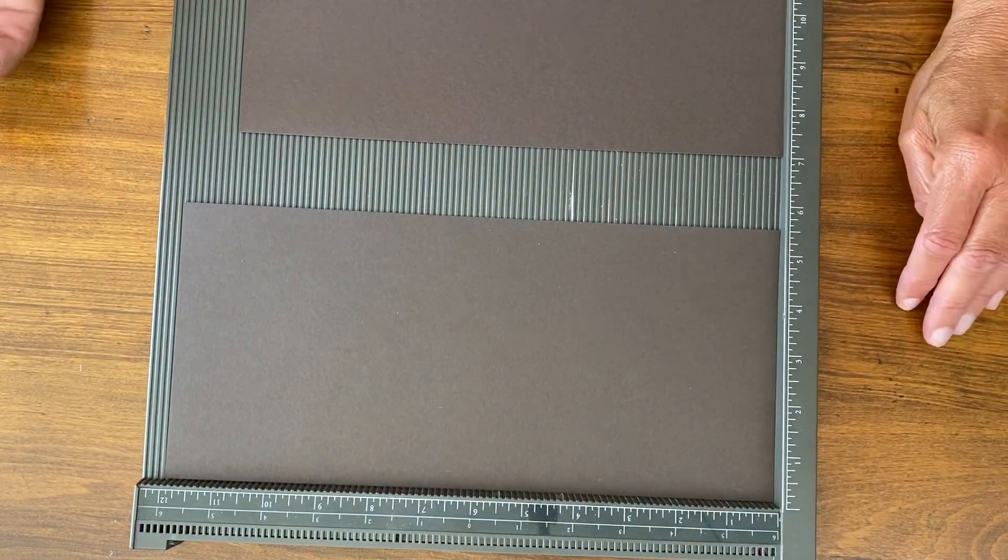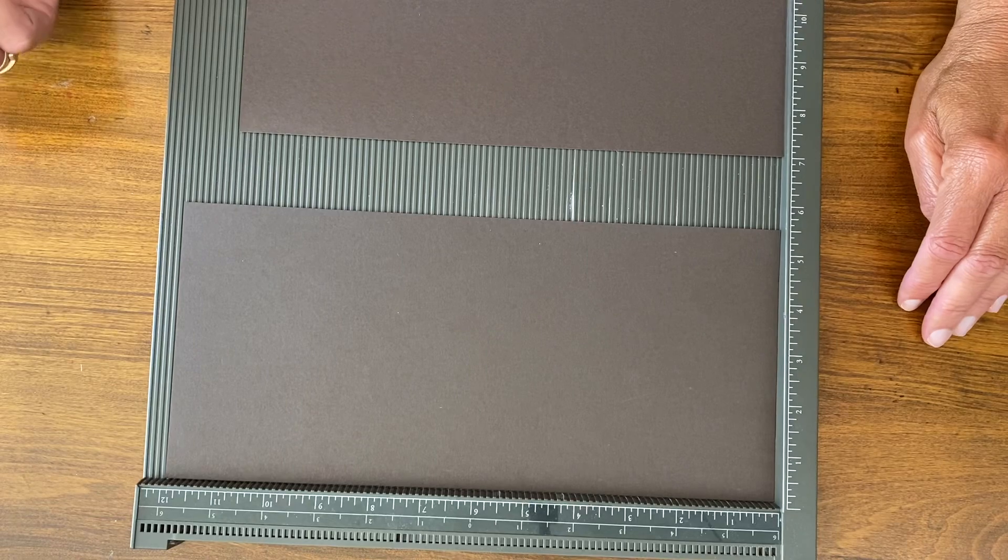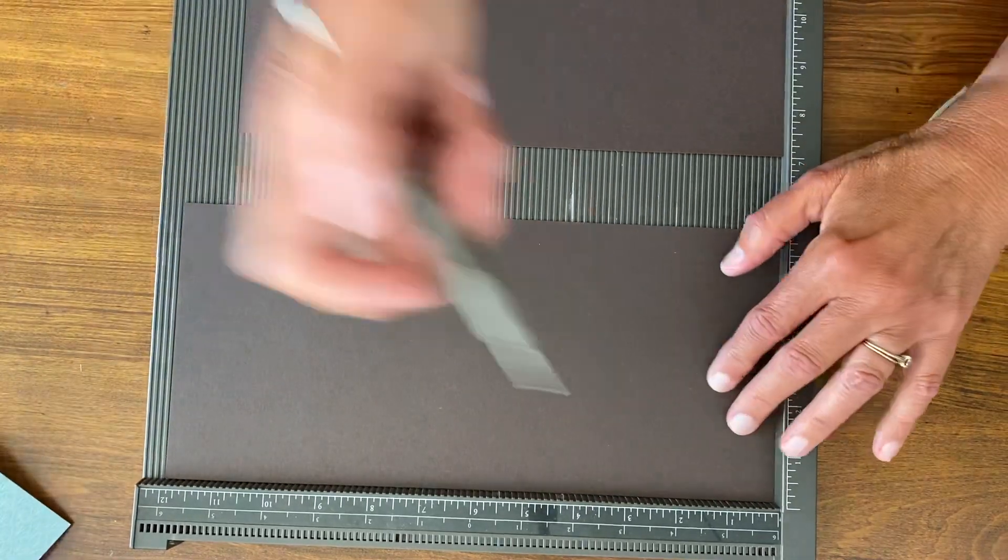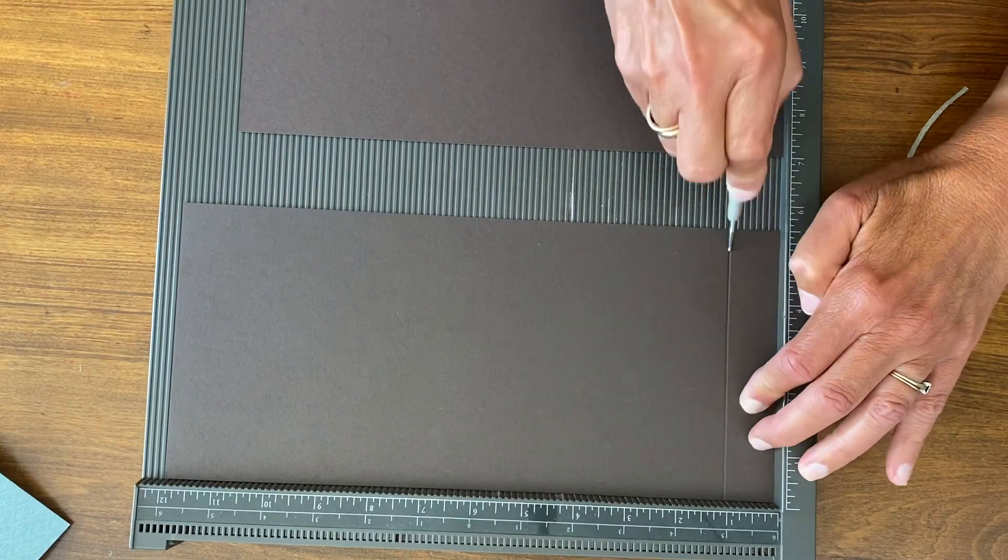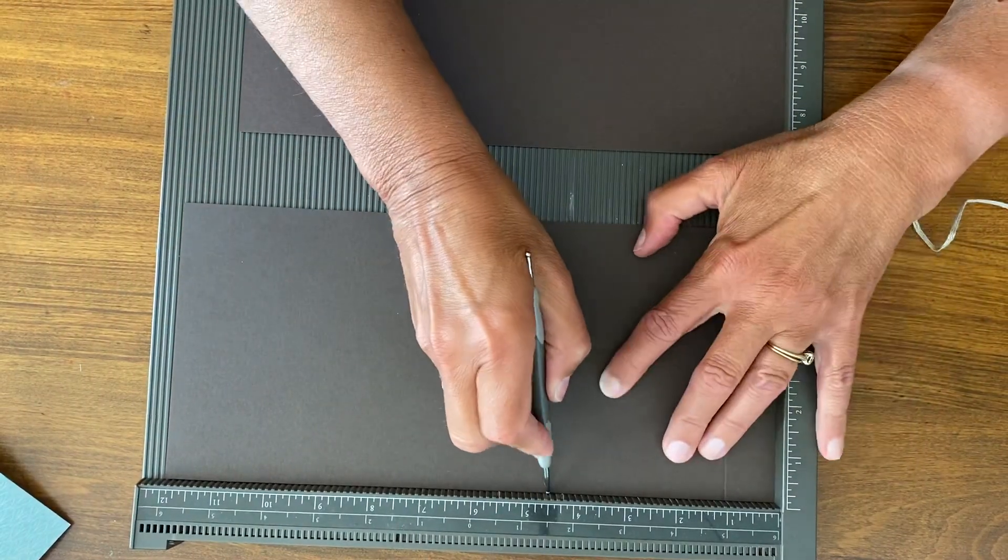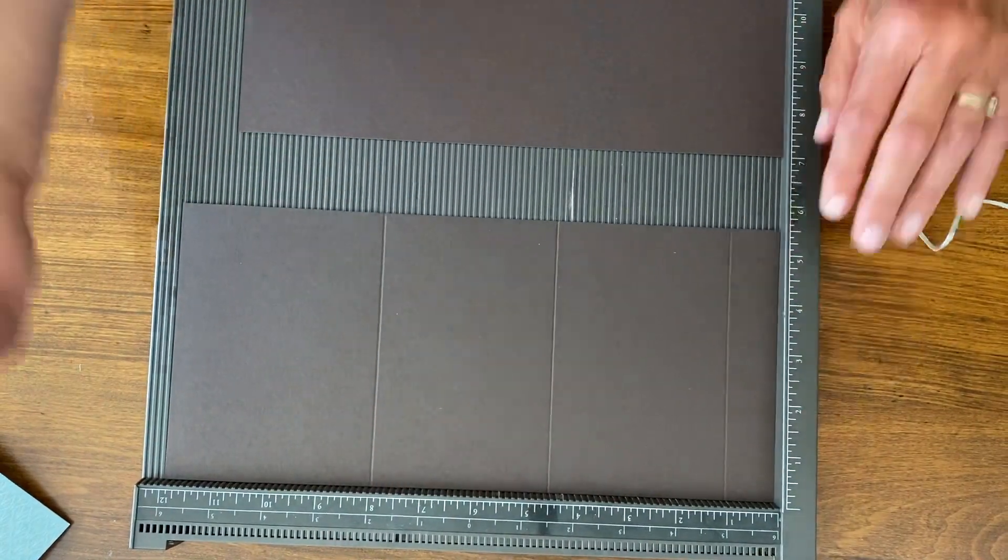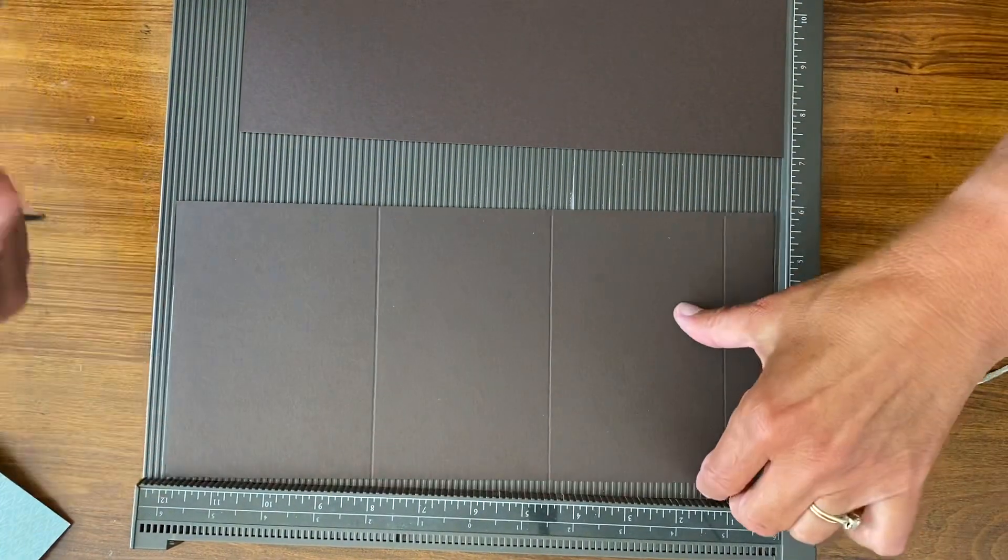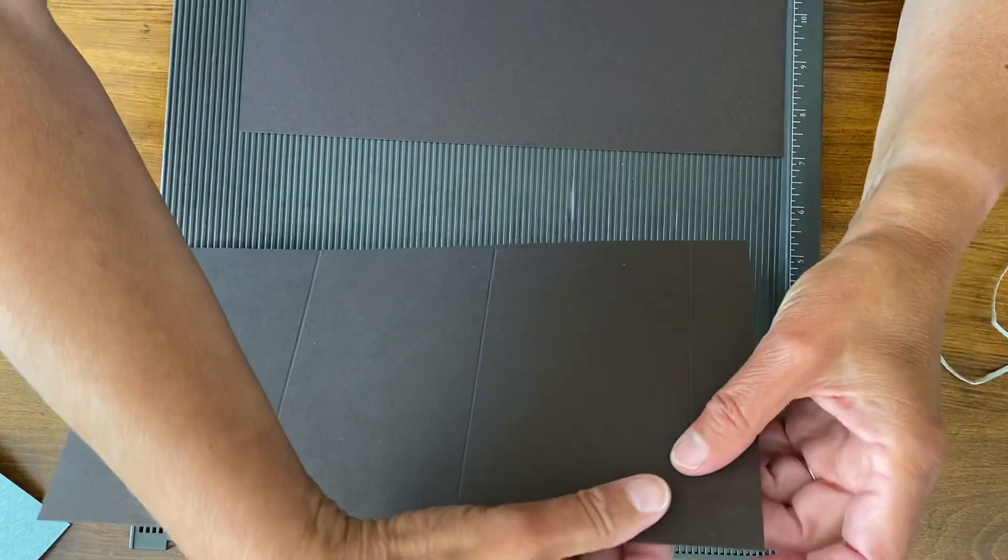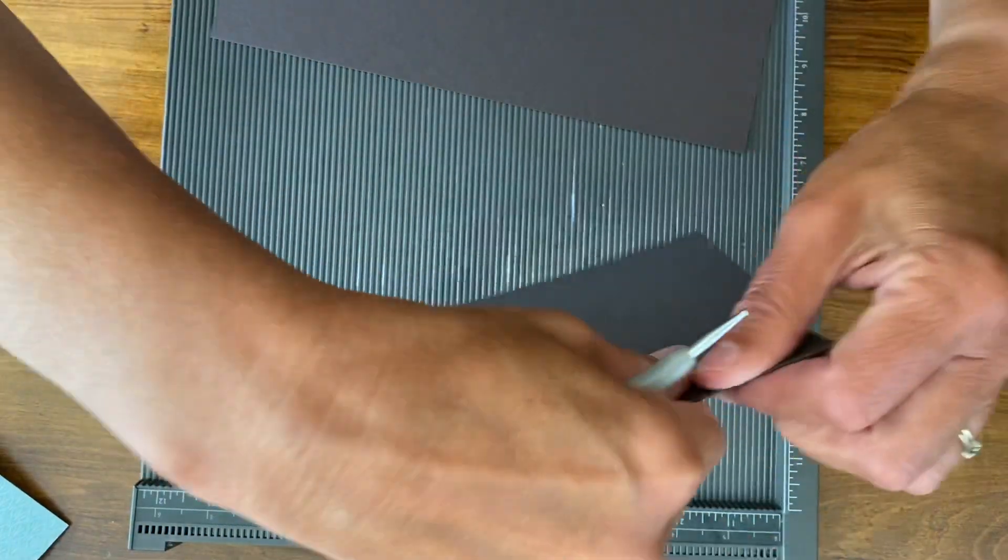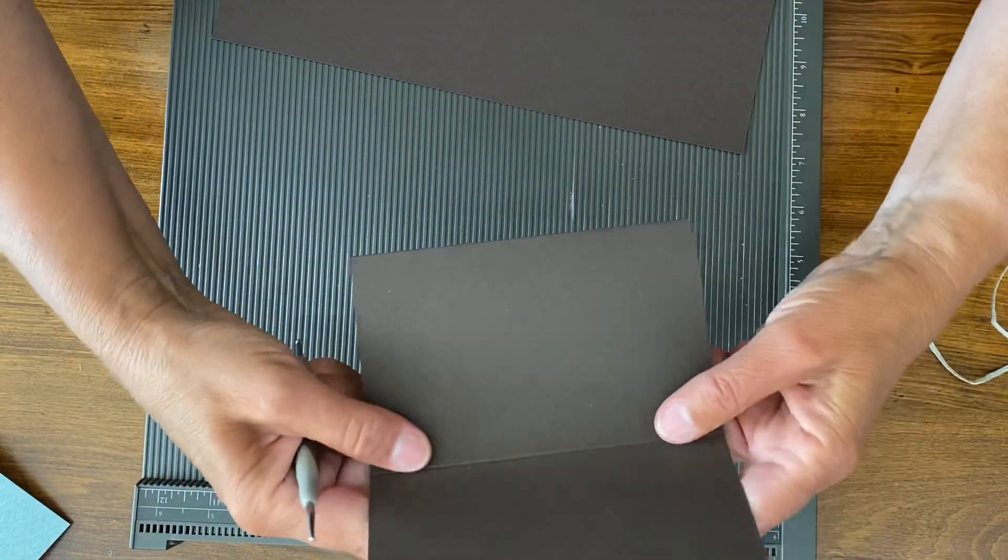First I'm going to take the five and a half by twelve and I am going to score it at one inch, four and a half inches, and eight inches. There will be in the description a link to go to my blog where all of this will be written out with the measurements, so don't feel like you have to get it all now.